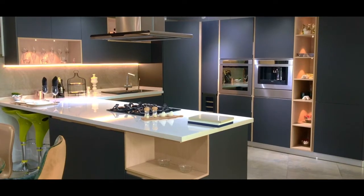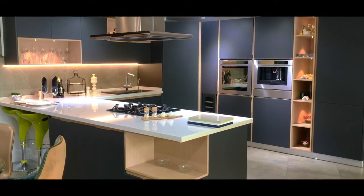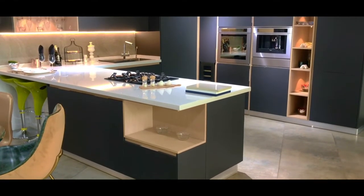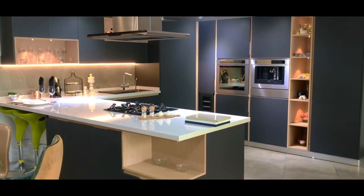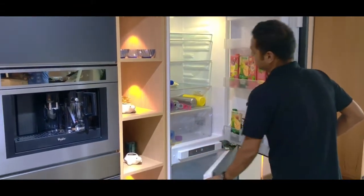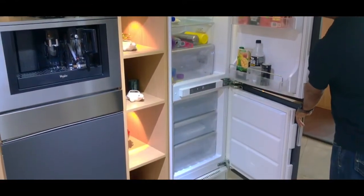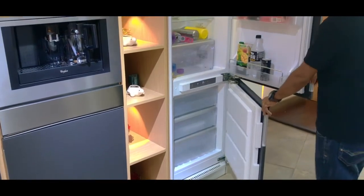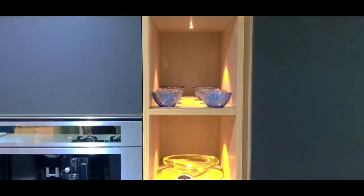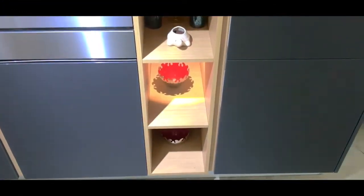The third kitchen you see as you walk in is the u-shaped kitchen with grey matte polylac and laminate finish. As you walk into the u-shaped kitchen the first cabinet you see on the right is a tower unit with integrated refrigerator. And right next to that we also have an open shelf cabinet with spotlights that are attached.